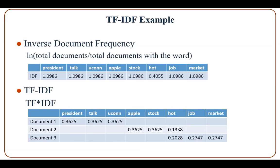total documents divided by the number of documents containing the word. From there we compute the TF-IDF score, which is indicated in the table. This table can then be used for machine learning and data mining algorithms.